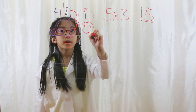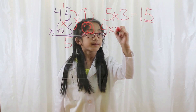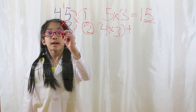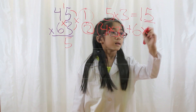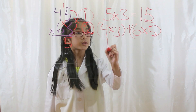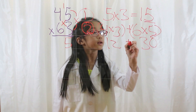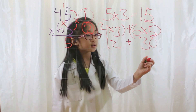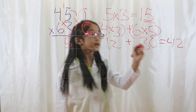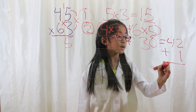Step 2. You cross multiply: 4 times 3 plus 6 times 5. 4 times 3 is 12, and 6 times 5 is 30. You sum the two numbers up: 12 plus 30 equals 42. You take the 1 that you carried and add it to 42. 42 plus 1 is 43.